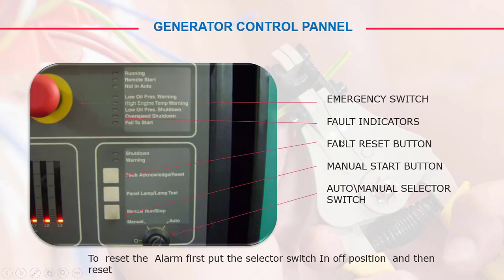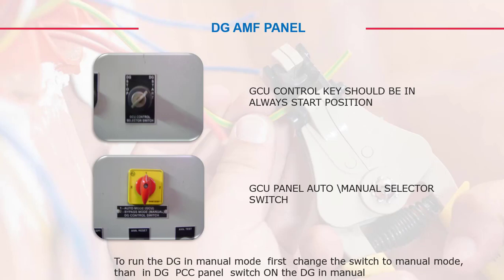On the generator control panel, you can see the red emergency push button and fault indicators, along with a fault reset button and a manual start button. An auto/manual selector switch is also available. To reset the alarm, first put the selector switch in the off position and then reset. This is a very important procedure for the DG reset. This panel is also called the DG AMF panel — auto manual panel.